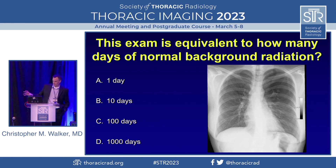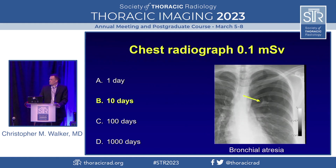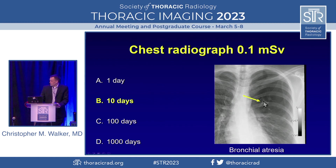Each one of these cases will also have a specific diagnosis associated with it. So take a look and see if you can identify the diagnosis. This is a chest radiograph, which is equivalent to 0.1 millisieverts of dose, and that's about 10 days of normal background radiation. You can also see a nice example of bronchial atresia — a branching tubular-shaped opacity representing the atretic bronchus filled with mucus, and then distal air trapping in the left upper lobe.